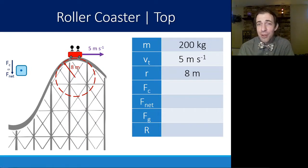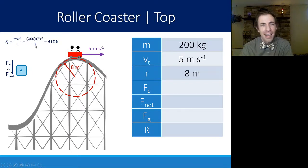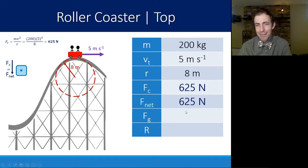We can calculate what that centripetal force has to be because I know m, v, and r. The mass is 200, the velocity is 5, and radius is 8. So 200 times 5 squared over 8 is 625 newtons. I can plug that in for my centripetal force. Centripetal and net force are the same thing.